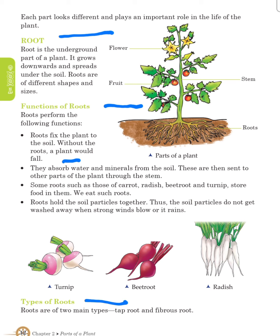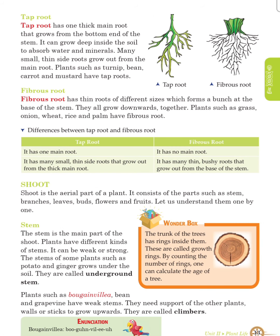Types of roots: roots are of two main types — taproot and fibrous root. Taproot has one thick main root that grows from the bottom end of the stem. It can grow deep inside the soil to absorb water and minerals. Many small thin side roots grow out from the main root. Plants such as turnip, beans, carrots and mustard have taproot.